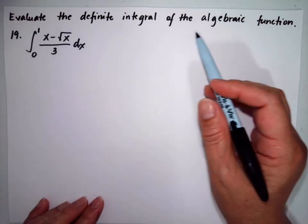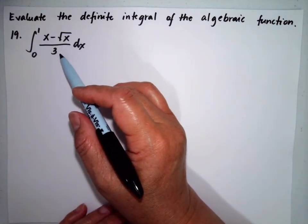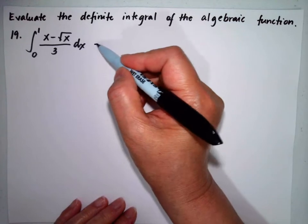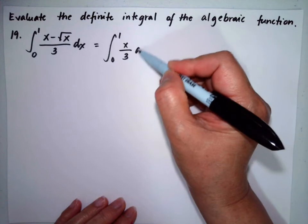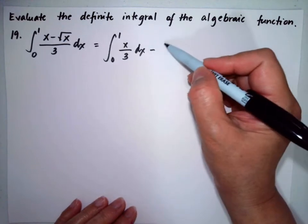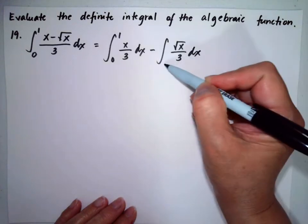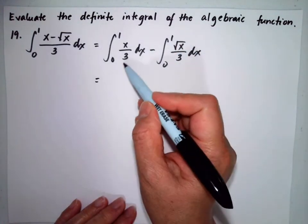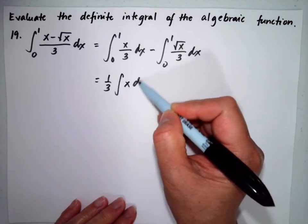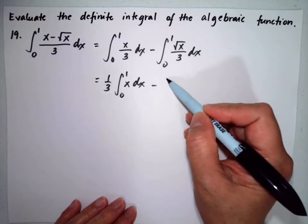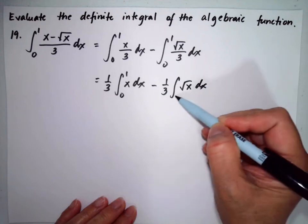Evaluate the definite integral of the algebraic function: integral of (x minus square root of x) over 3 dx from 0 to 1. This can be separated into the integral of x over 3 dx minus the integral of square root of x over 3 dx, from 0 to 1. So this becomes 1/3 times the integral of x dx from 0 to 1, minus 1/3 times the integral of square root of x dx from 0 to 1.